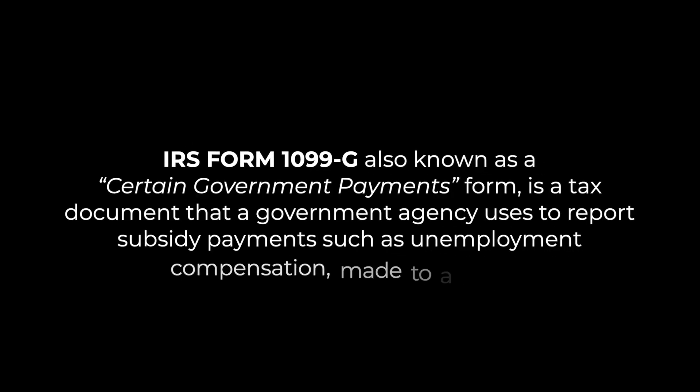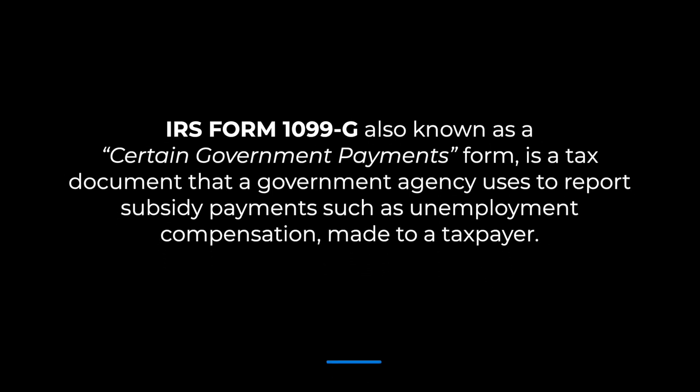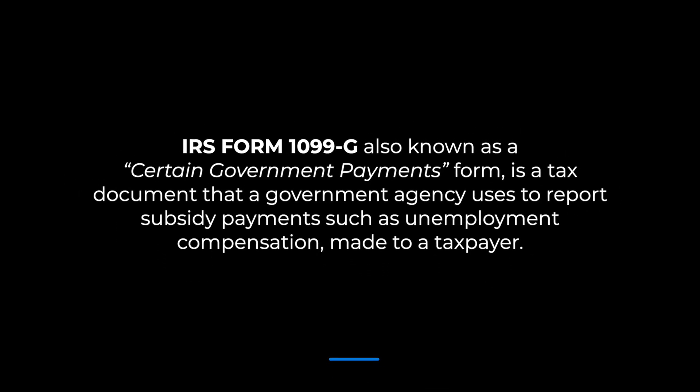IRS Form 1099-G, also known as a Certain Government Payments Form, is a tax document a government agency uses to report subsidy payments such as unemployment compensation made to a taxpayer. It's important to make sure this is filled out accurately or there is the possibility of penalties.